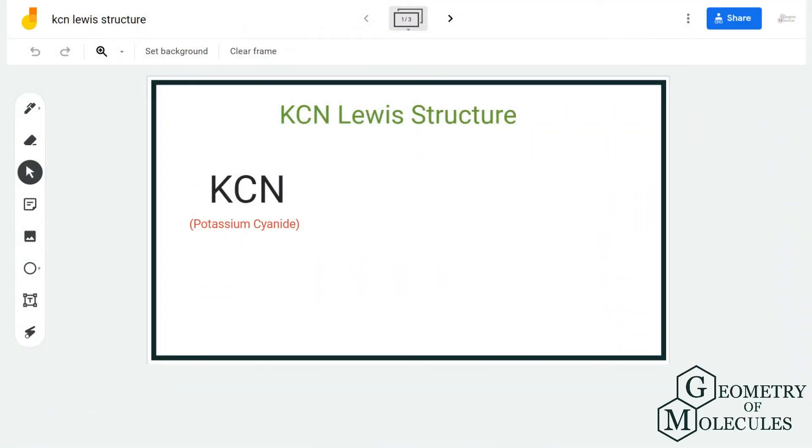Hi guys, welcome back to our channel. In today's video, we are going to help you determine the Lewis structure of KCN. KCN is a chemical formula for potassium cyanide, and this name comes from the fact that it is made up of one potassium atom and a cyanide group. CN represents the cyanide group.